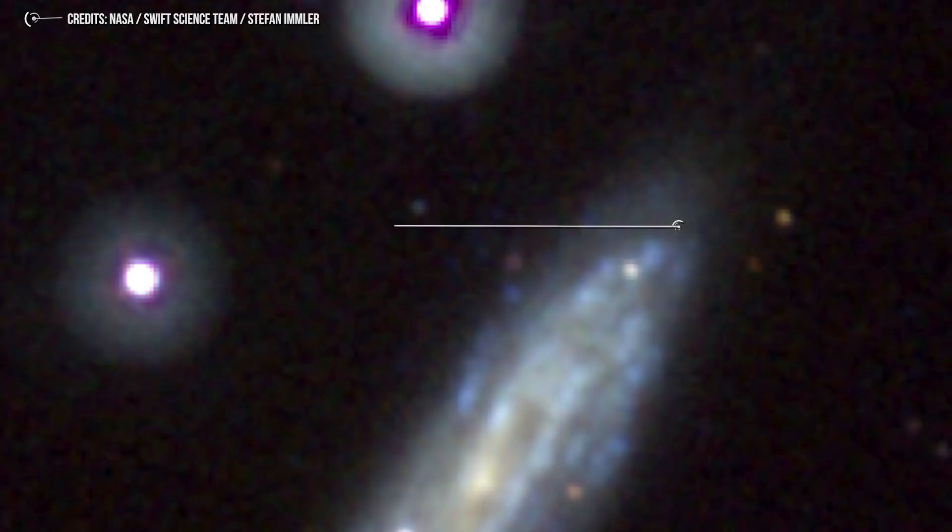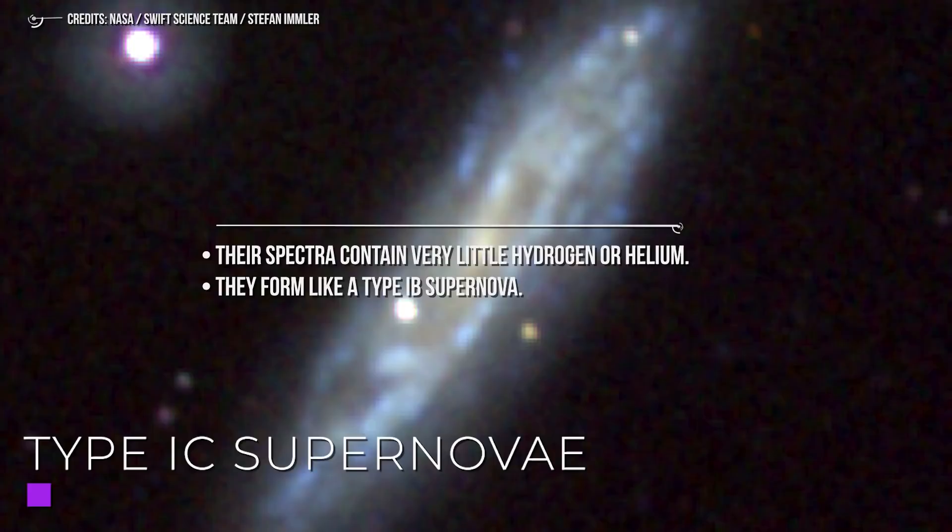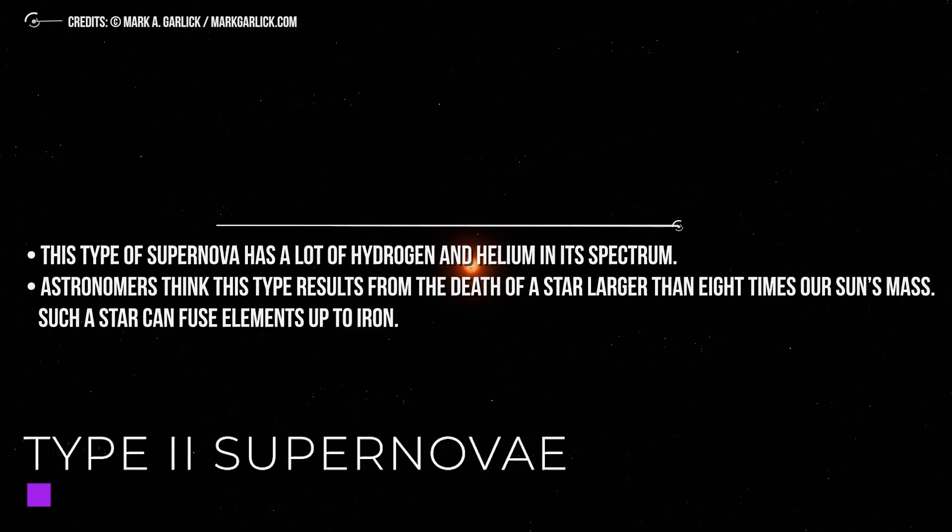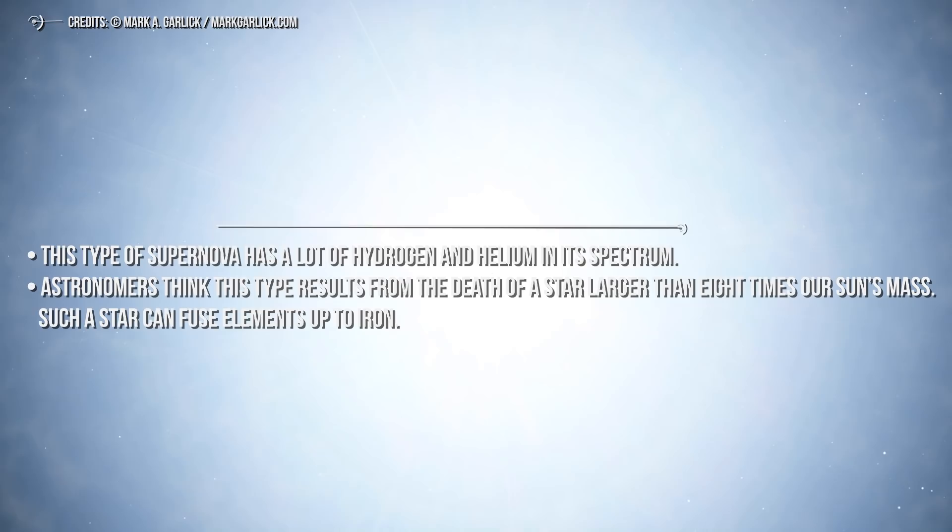Type 1C supernovae: their spectra contain very little hydrogen or helium. They form like a type 1B supernova. Type 2 supernovae: this type has a lot of hydrogen and helium in its spectrum. Astronomers think this type results from the death of a star larger than 8 times our sun's mass. Such a star can fuse elements up to iron.